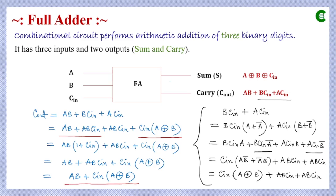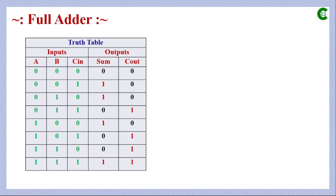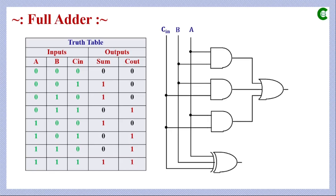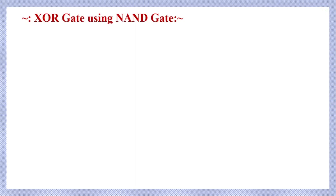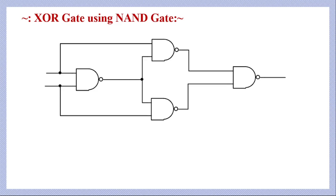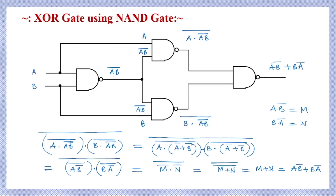This is the truth table of a full adder circuit. With three inputs there are eight combinations, and we can see the corresponding sum and carry values for each combination. This is the full adder circuit with three inputs A, B, and C_in, giving sum and carry outputs. Now we will implement it using NAND gates only. First, we see how to implement an XOR gate using NAND gates, which we have already seen in a previous class. To implement an XOR gate we need four NAND gates.